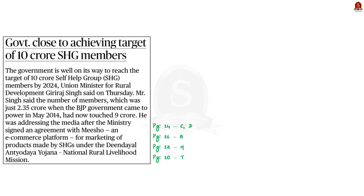The government is on its way to reaching the target of 10 crore self-help group members by 2024. According to the Union Minister for Rural Development, the number of self-help group members was just 2.35 crore when the BJP government came to power in May 2014, but has now touched 9 crore. This was said at an event where the government signed an agreement with Meesho for the marketing of products of self-help groups.